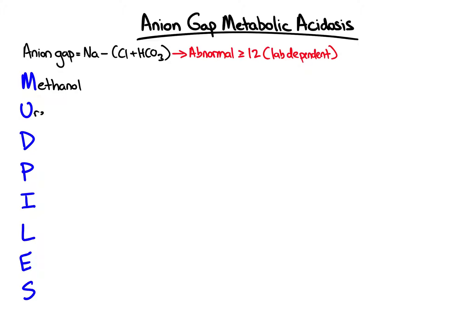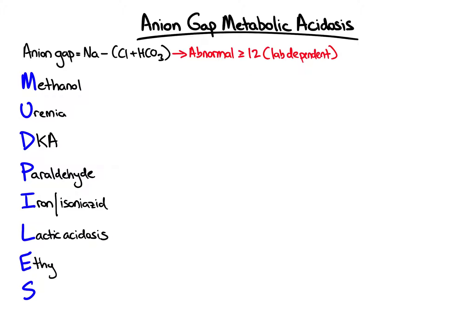MUD PILES stands for: Methanol, Uremia, DKA, Pyraldehyde, Iron or Isoniazid, Lactic acidosis, Ethylene glycol, and Salicylates. While this mnemonic is certainly helpful, a few of its components — namely pyraldehyde, iron, and isoniazid — are now rarer causes of metabolic acidosis.